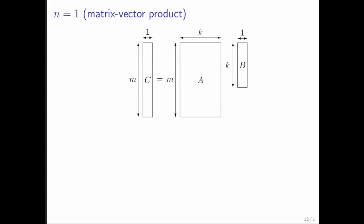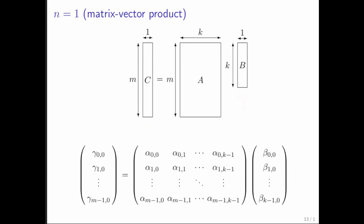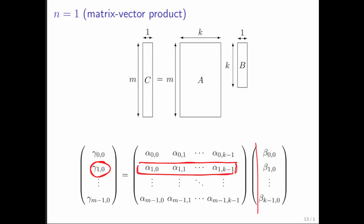Here's another one we've seen before. If n is equal to 1, then C has only one column and B has only one column — we end up with a matrix-vector multiplication. When you look at how it's computed, it's the row corresponding to the entry you're trying to compute, dot product with the vector — exactly how matrix-vector multiplication was defined. Whether you view these as matrices or as matrix A with vectors C and B, you get exactly the same result.